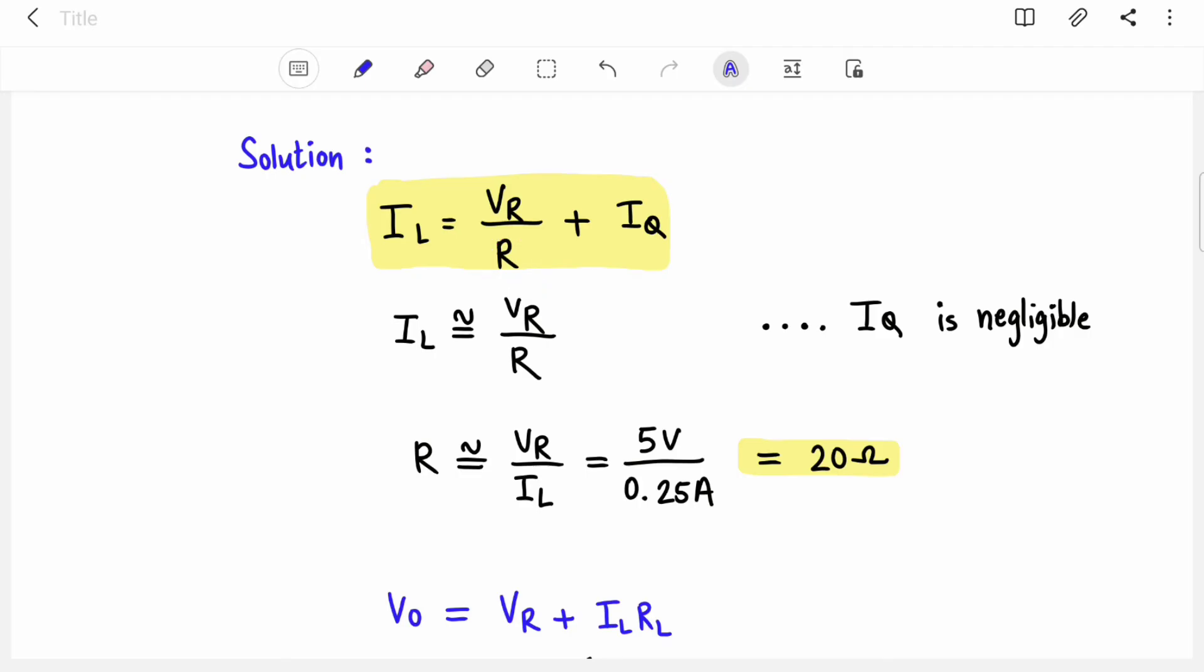So first we will find out value of R. This is the equation of load current which we saw earlier. Now here I am again ignoring IQ because it is negligible. Equation of R will be VR upon IL. Now what is VR? 5 volt. And IL is given in the numerical, that is 0.25 ampere. R comes out to be 20 ohms.